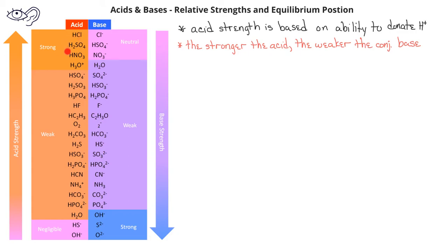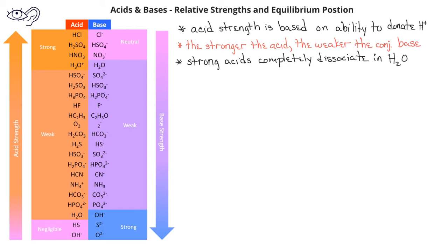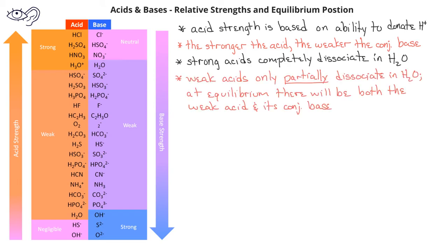When we refer to a strong acid, such as HCl, H2SO4, or HNO3, we refer to those species that will completely dissociate or ionize in water, leaving no undissociated acid in solution. The conjugate base of strong acids will be very weak bases. On the other hand, what we refer to as weak acids will only partially dissociate or ionize in water. At equilibrium, there will be a mixture of undissociated acid and its conjugate base.